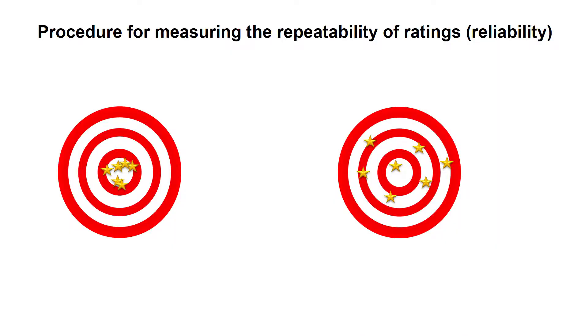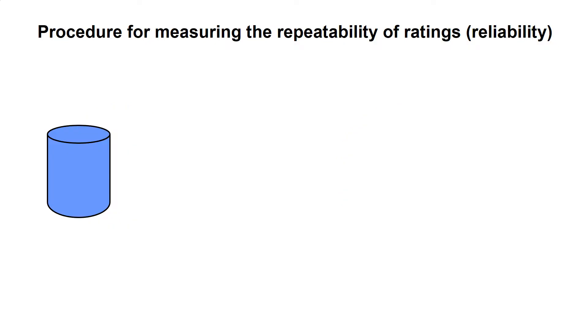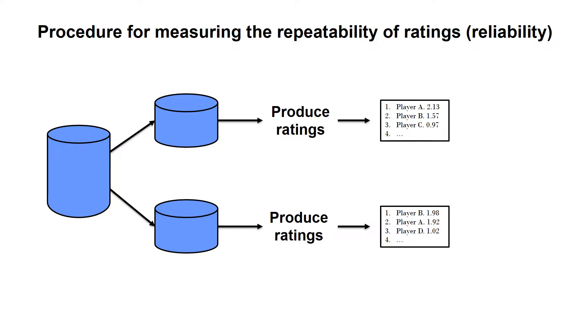First, consider reliability. That is, we want to produce similar player ratings even when using different sets of historical matches as the basis for our calculations. Since we only have a limited number of historical matches in the first place, we will do this by taking our full set of historical matches and split it randomly into two subsets of approximately equal size. We then produce ratings based on each of these subsets independently.